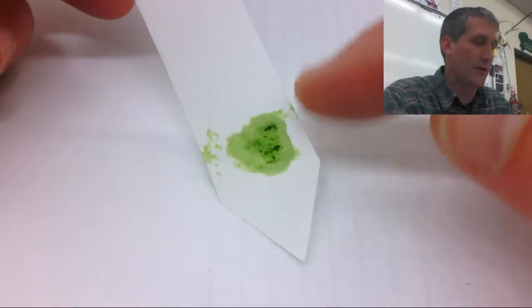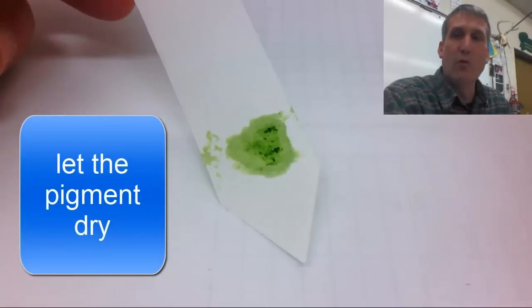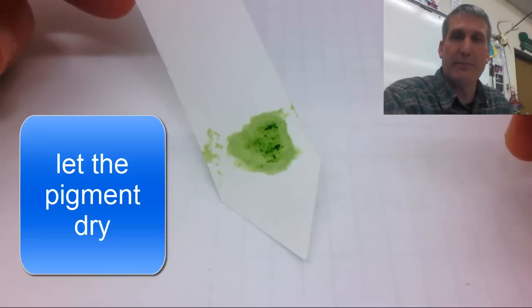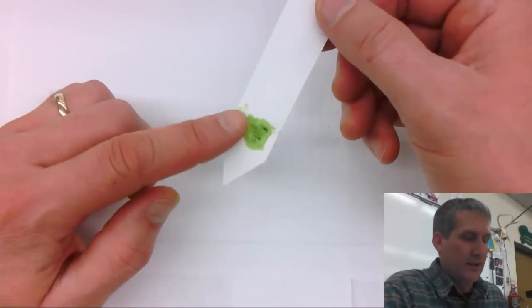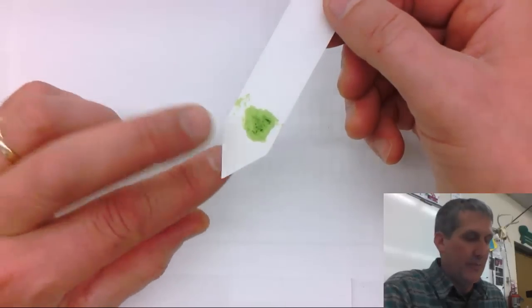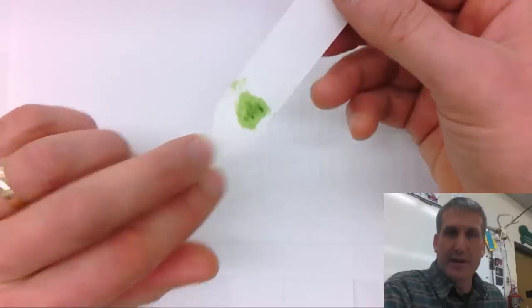Once you've transferred enough pigment from the spinach leaf onto the chromatography paper it will be a little wet because there's a lot of water in the tissue of the spinach leaf. You want to give it time to dry either by putting it on a heater or leaving it on your desk until the water evaporates. When the chromatography paper has dried and all the water has evaporated you're left with the pigment on the chromatography paper.